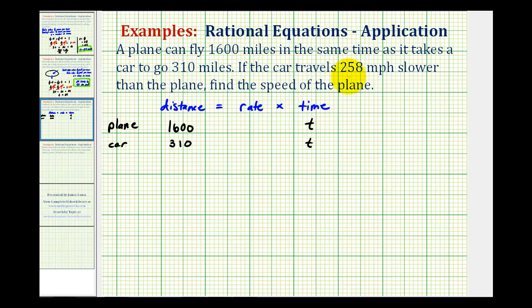Next it says if the car travels 258 miles per hour slower than the plane, we want to find the speed of the plane. So we don't know the rate of the plane, so let's use r for the rate of the plane. But we do know the car is traveling 258 miles per hour slower than the plane. So we can express the rate of the car as r minus 258 miles per hour.